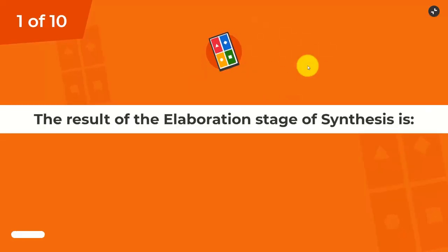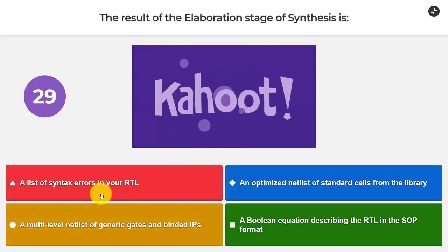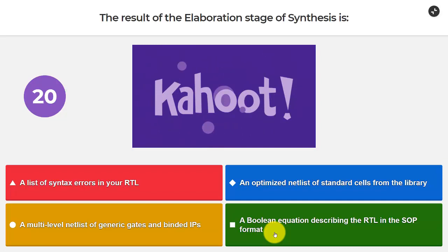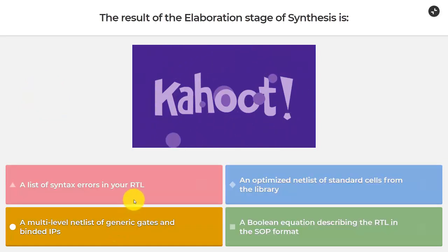Our first question is: the result of the elaboration stage of synthesis is a list of syntax errors in your RTL, an optimized netlist of standard cells from the library, a multilevel netlist of generic gates and bound IPs, or a Boolean equation describing the RTL in the sum of products formula. I believe it's a multilevel netlist of generic gates and bound IPs.